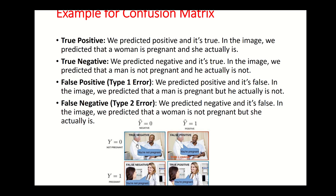There should be one way to keep these interpretations in your mind. True positive: you predicted positive and it is true. True negative: you predicted negative and it is true. False positive: you predicted positive and it is false. False negative: you predicted negative and it is false. Try to keep one consistent interpretation in your mind.